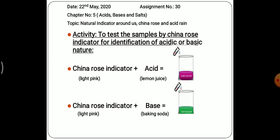Here we will test samples using China rose indicator for identification of acidic or basic nature. For an acidic solution we took lemon juice, and for a base we took baking soda. We will take China rose indicator and add lemon juice — it will convert into dark pink color. When China rose indicator is added to baking soda, it will convert into green color. Green color indicates that the substance is basic in nature. With China rose indicator we can identify whether a substance is acidic or basic.